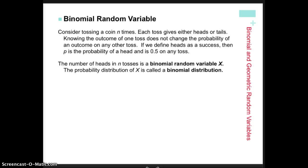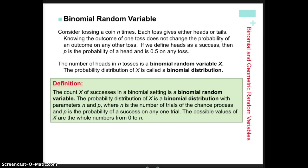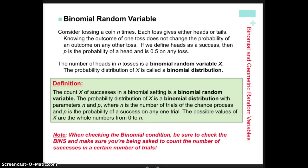We can have a probability distribution of a binomial random variable, just like we've had for other random variables. A binomial random variable is discrete, not continuous, meaning it has to do with the count rather than the measurement of a numerical variable. We define the parameters of this binomial distribution with n as the number of trials, p as the probability of success, and x as our specific random variable of interest.